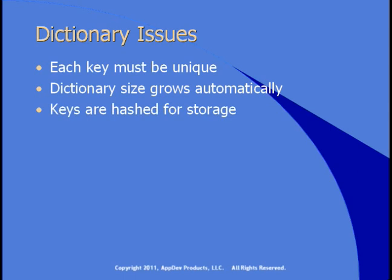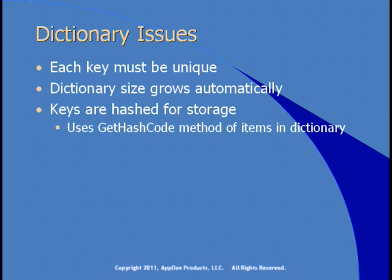Keys are hashed for storage. A hashing algorithm takes any value and converts it into an integer. The more unique that integer value is, the better the dictionary can store the data. Every object in .NET provides a getHashCode method on the base System.Object class. Unfortunately, the base getHashCode doesn't do a very good job of providing unique integer values. So if you're adding objects to a dictionary, you may want to ensure they provide their own getHashCode method that overrides the base class's implementation.